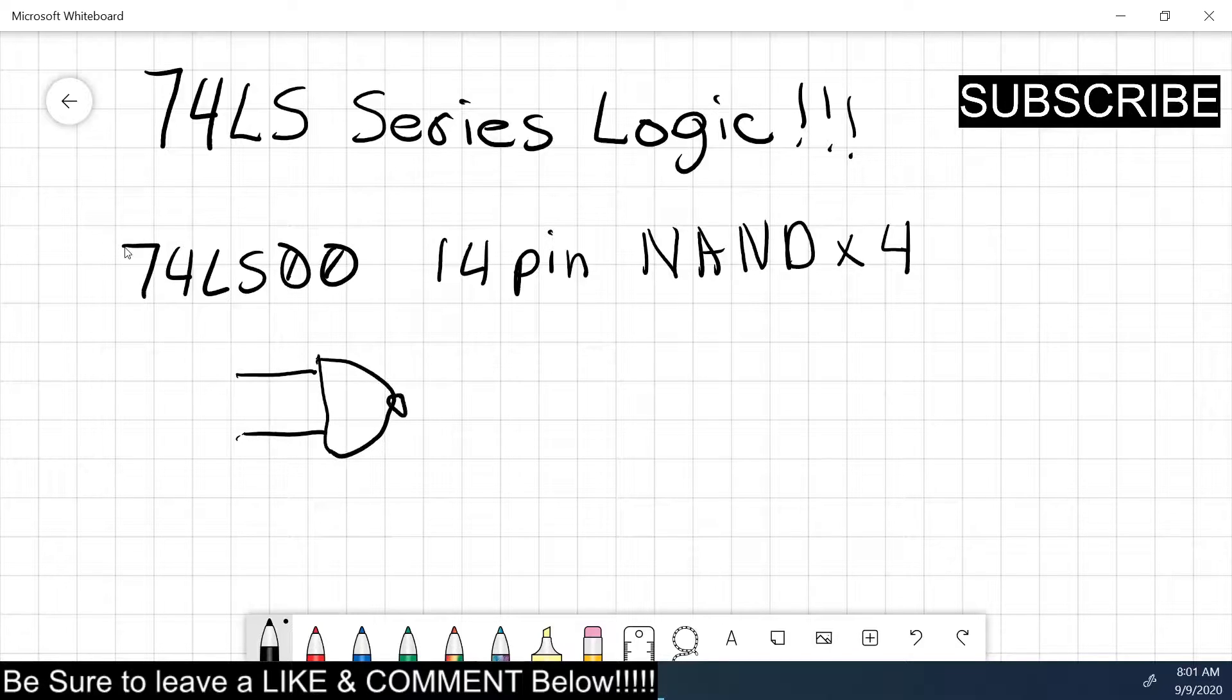It's got the inversion bubble here. And you have A, B, and then you have your output. If we make a truth table, A, B, output.